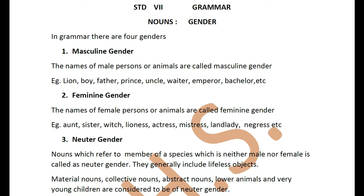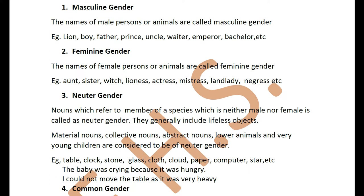Going to feminine gender — feminine gender is a name of anything that is female. Like aunt, mother, sister, princess, queen. All these are feminine in gender. The names of male persons or animals are called masculine gender. Examples: lion, boy, father, prince, uncle, waiter, emperor, bachelor, etc.